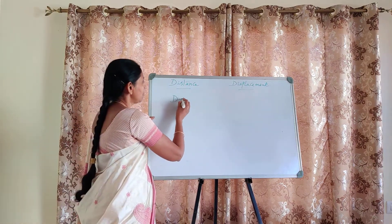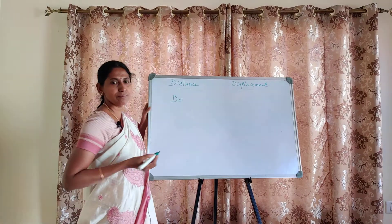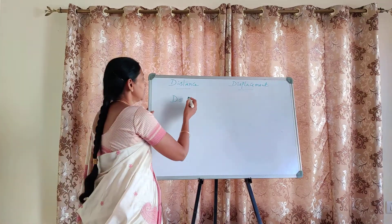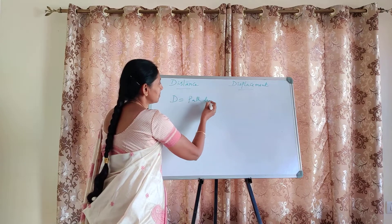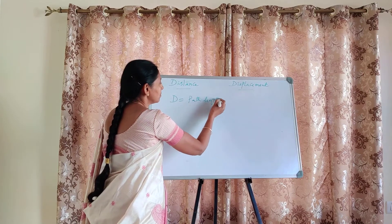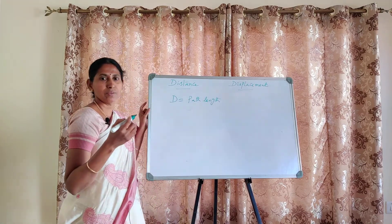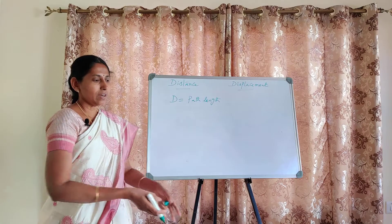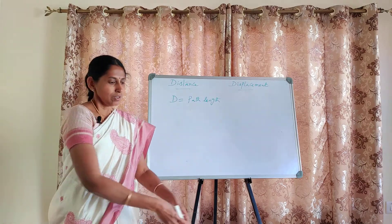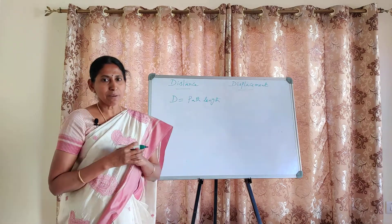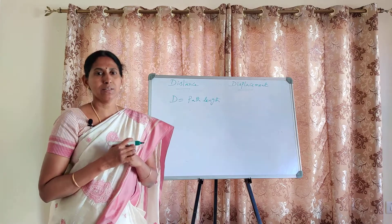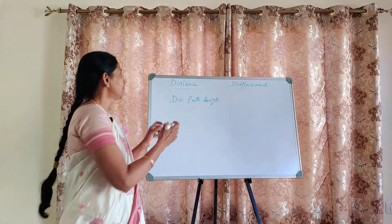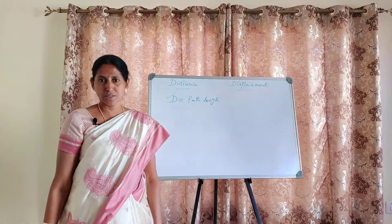Distance — what do you mean by distance? Distance is nothing but path length while you are traveling. You might have covered one path. If you measure the length of that path, the length of the path is nothing but distance.